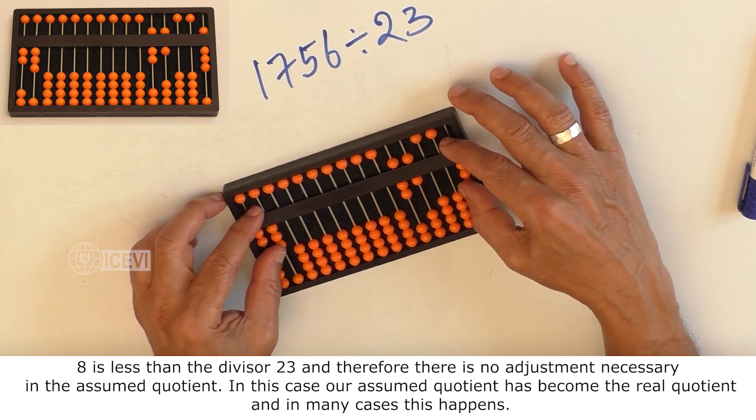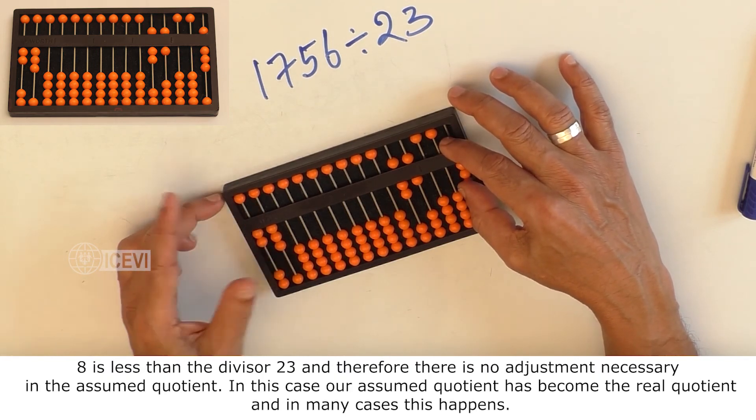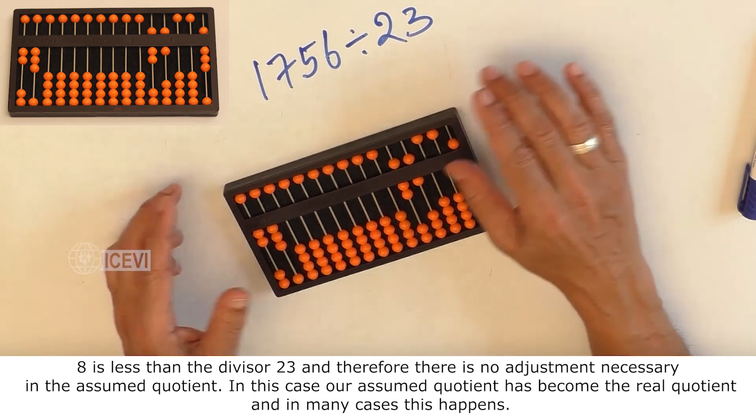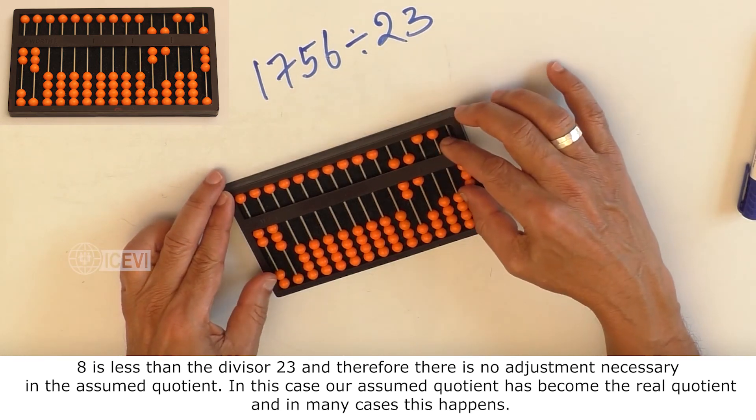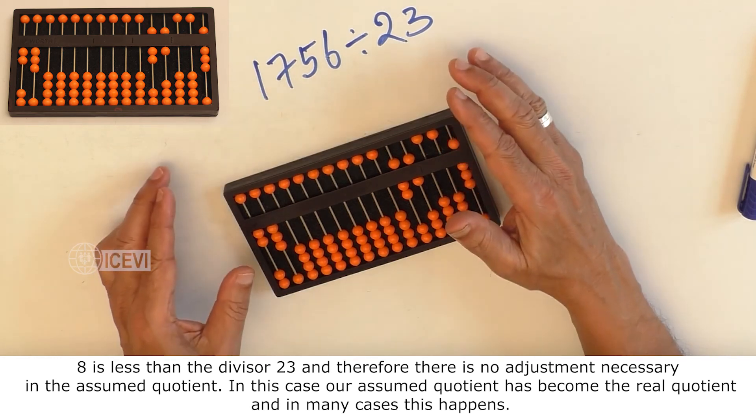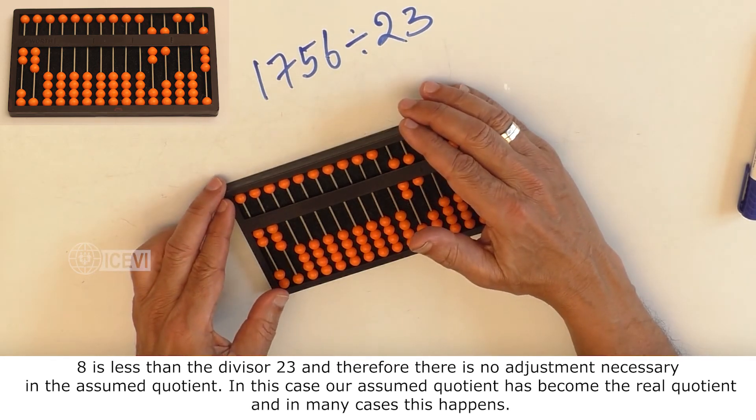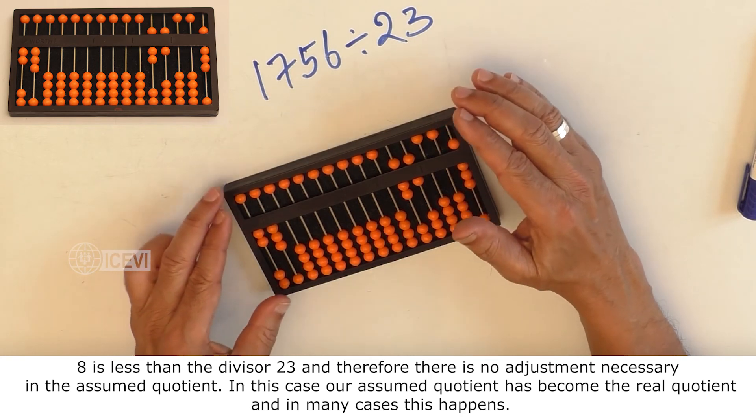Now we are left with 8 in the units column. 8 is less than 23 and therefore there is no adjustment necessary in the assumed quotient. In this case, our assumed quotient has become the real quotient and in many cases this happens.